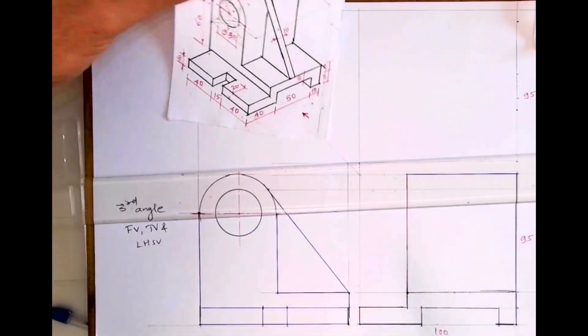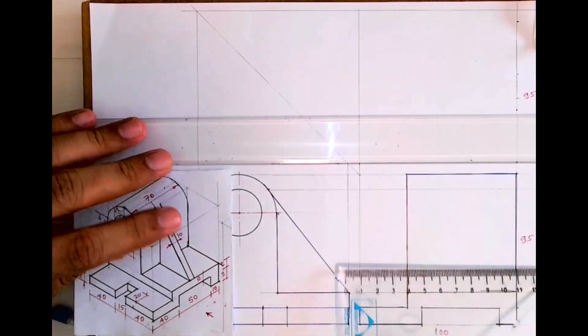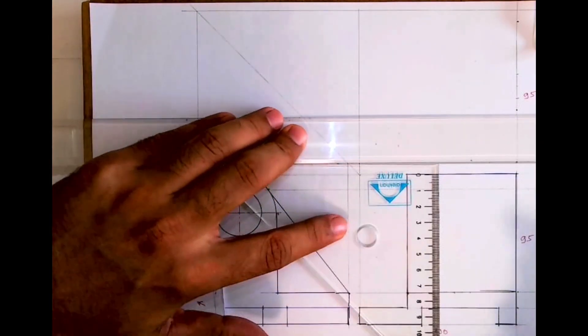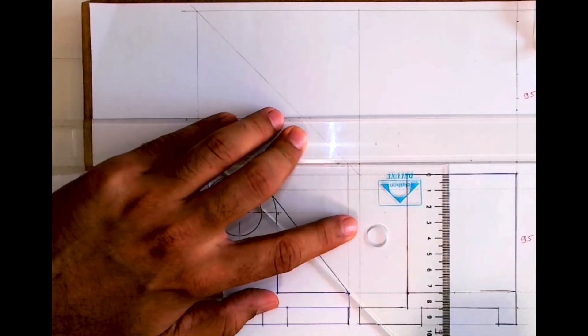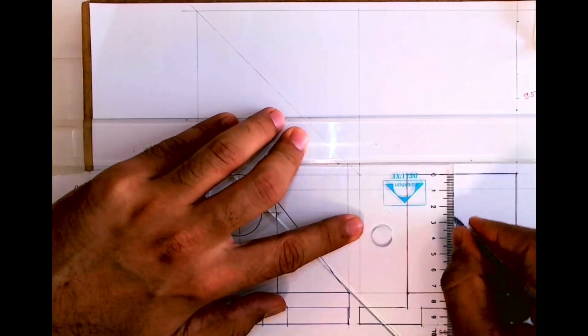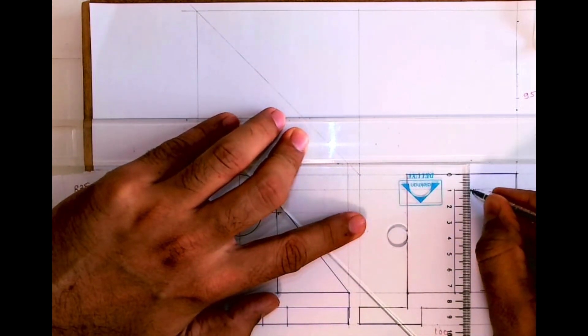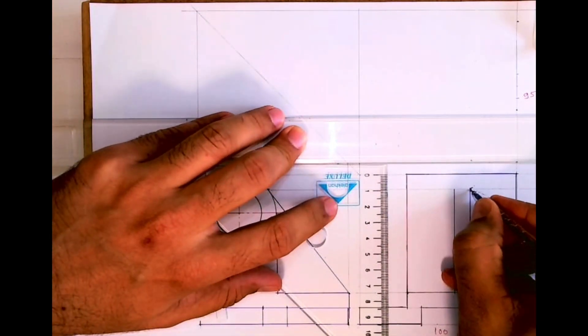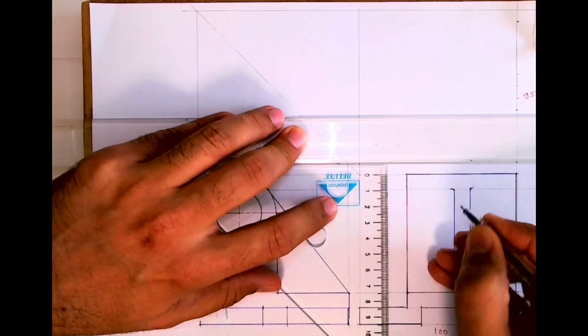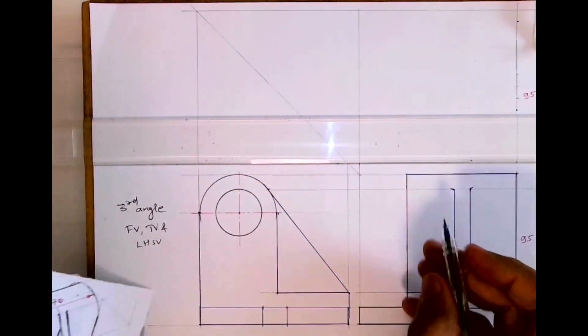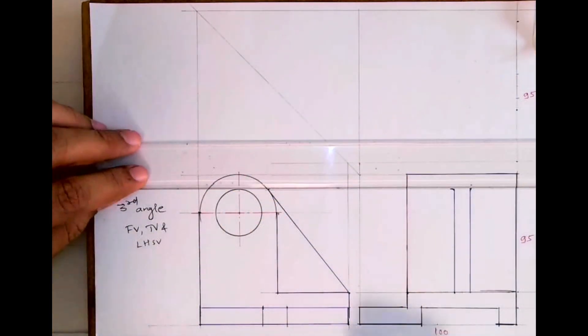So in side view, we will draw tangent to that circle. And in front view now when we project, we project that point from side view. And see we will go till there, and we will draw a slight curve freehand. This will show that rib is merging in that circular part.